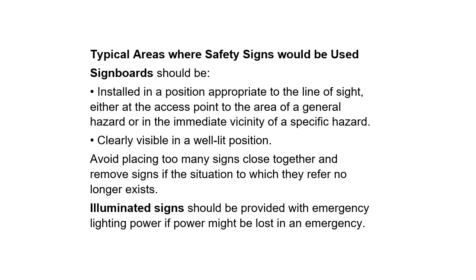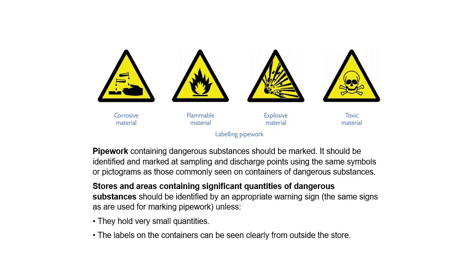Illuminated signs should be provided with emergency lighting power if power might be lost in an emergency. Pipework containing dangerous substances should be marked — identified at sampling and discharge points using the same symbols or pictograms as those commonly seen on containers of dangerous substances. Stores and areas containing significant quantities of dangerous substances should be identified by an appropriate warning sign, using the same signs as for marking pipework, unless they hold very small quantities or the labels on the containers can be clearly seen from outside the store.